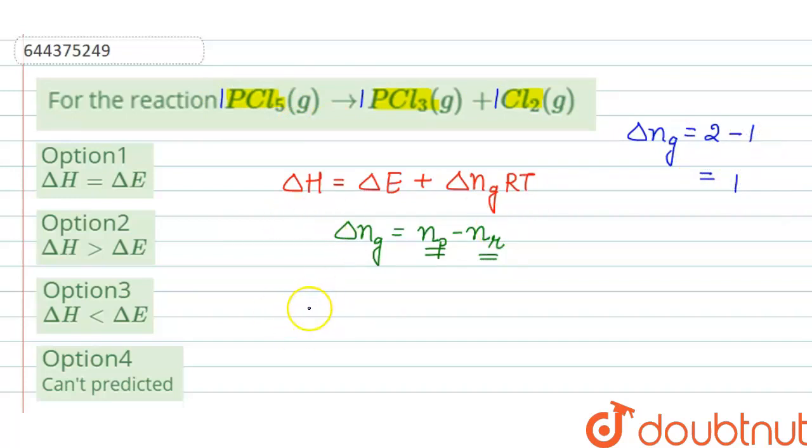This relation can be written as delta H equals delta E plus delta NG, its value is 1, so RT.